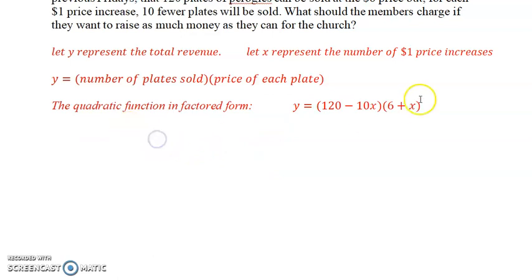Now what we do is set it equal to zero. Set it equal to zero because we're finding the x-intercepts. So that means we've got each of these equal zero. We take each factor, set it equal to zero.